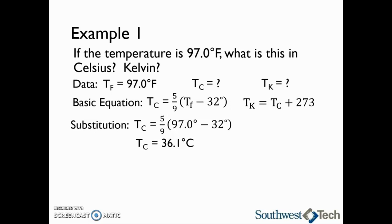Now that we have the Celsius temperature, we can find the Kelvin temperature by taking the Celsius temperature plus 273. Substituting, we have 36.1 degrees plus 273 equals 309 Kelvin. This concludes our discussion on temperature.